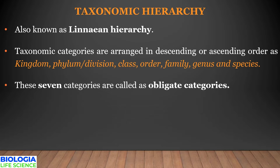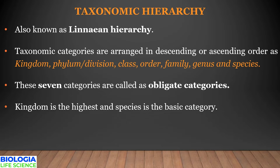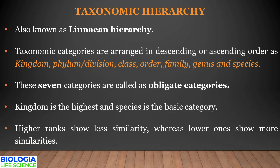All these seven are termed as obligate categories, and any given species can be traced to these seven categories. Among all seven, kingdom is the highest and species is the basic or smallest category. The highest rank, kingdom, shows less similarity among organisms within it, while species shows more similarities.